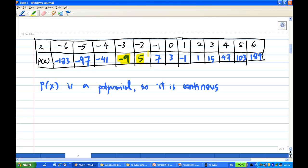So, you notice that there are a few values where P(x) has the opposite sign. Between minus 3 and minus 2, P(x) has the opposite sign. Between 0 and 1, P(x) has the opposite sign.